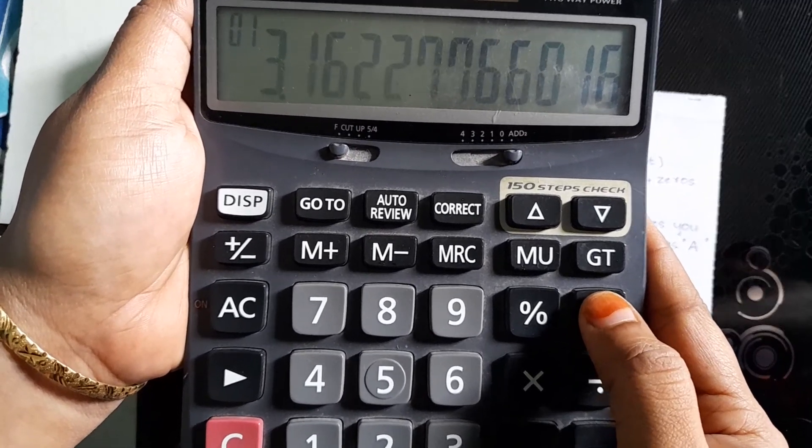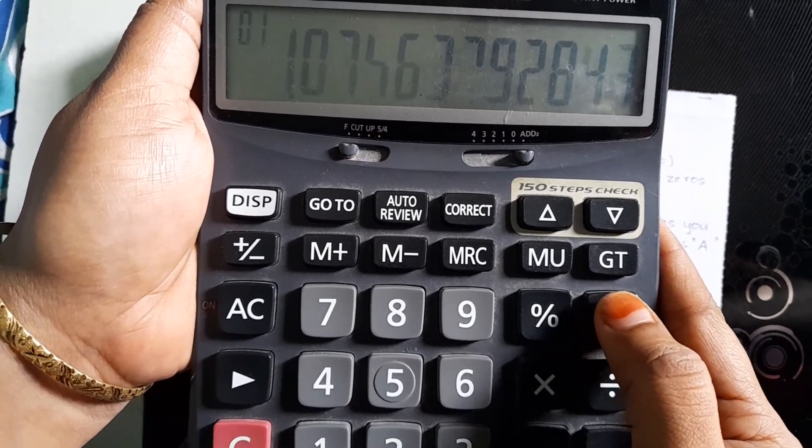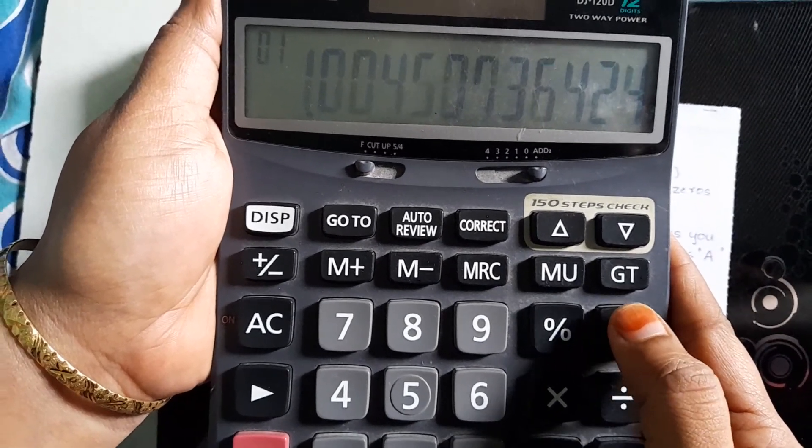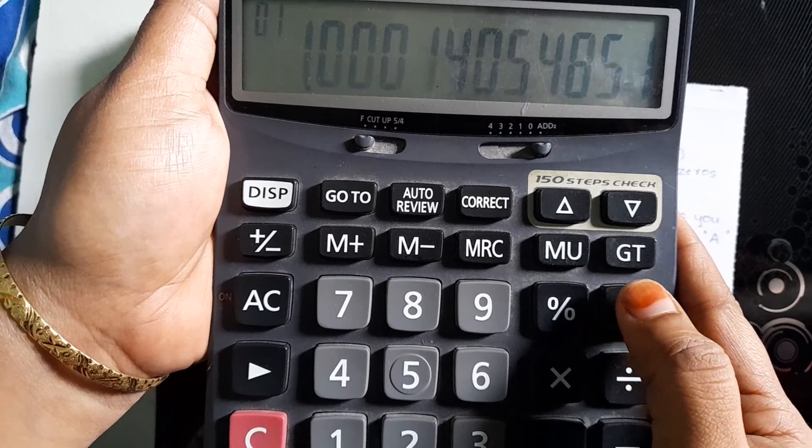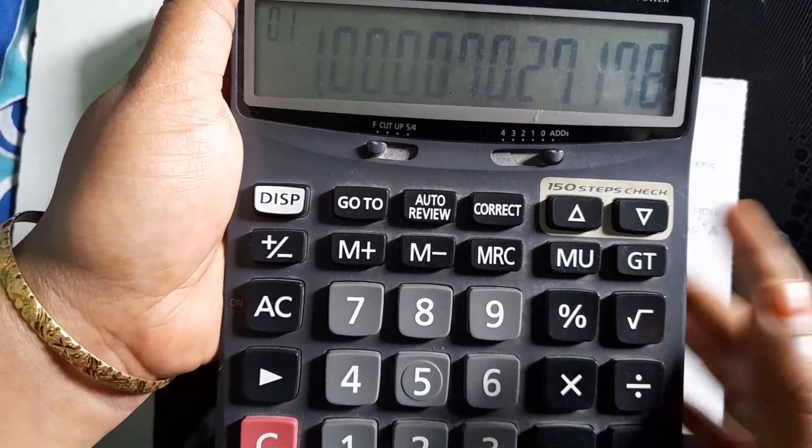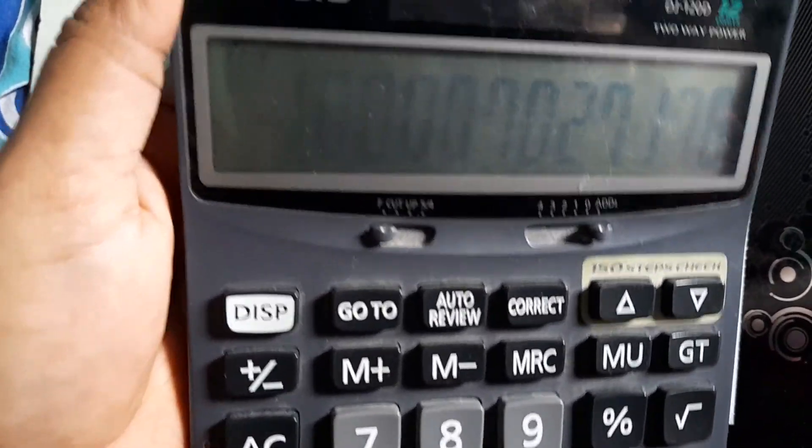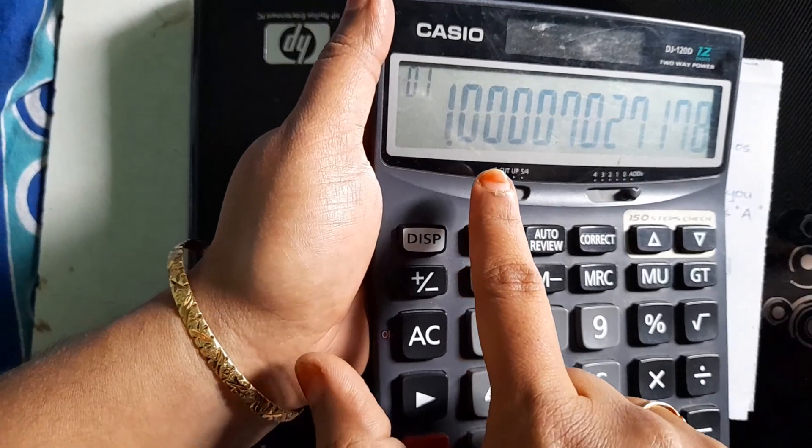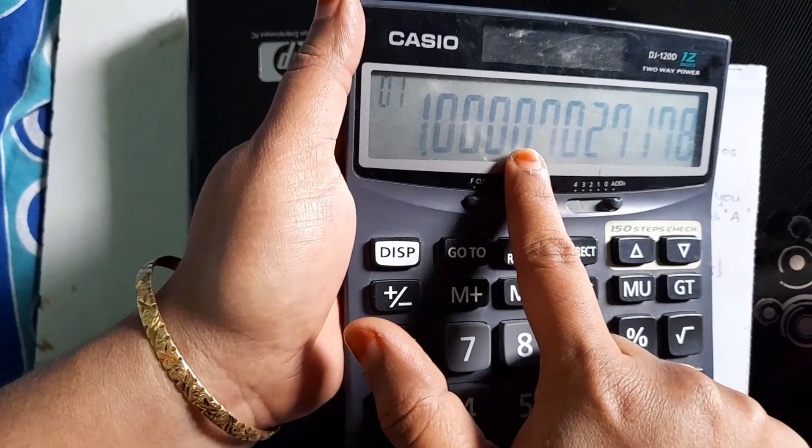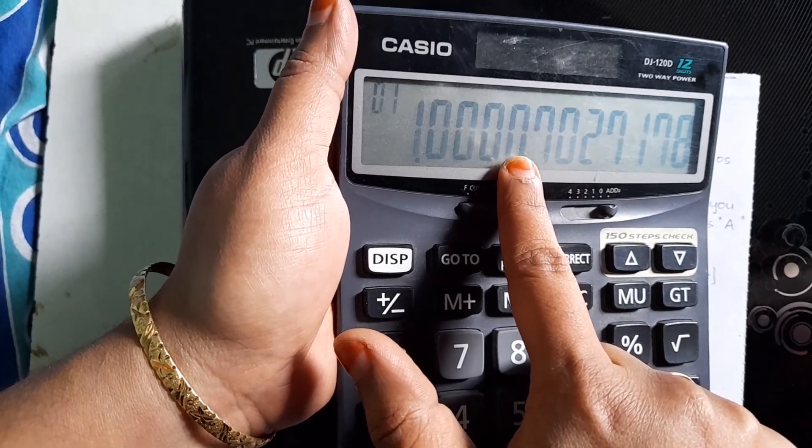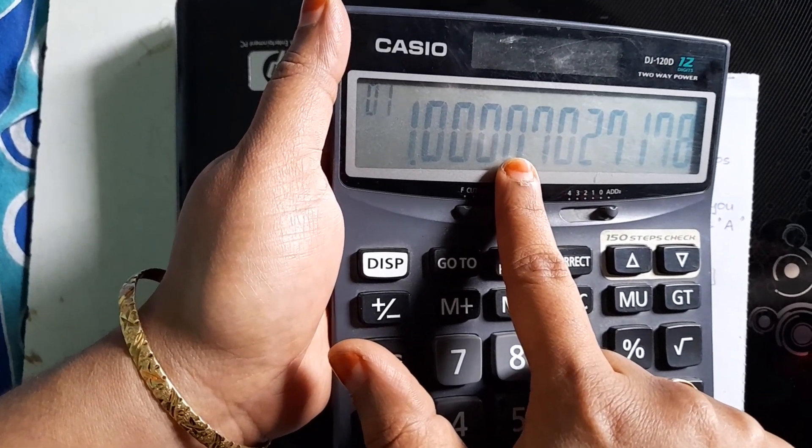1, 2, 3, 4, 5, 6, 7, 8, 9, 10, 11, 12, 13, 14, 15. See, I pressed 15 times to get 4 zeros after decimal. 1, 2, 3, 4. To get this 4 zeros, I pressed 15 times root sign.